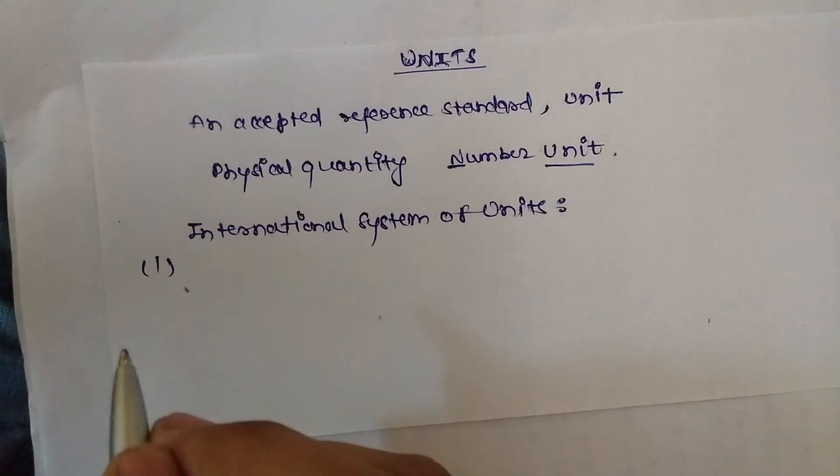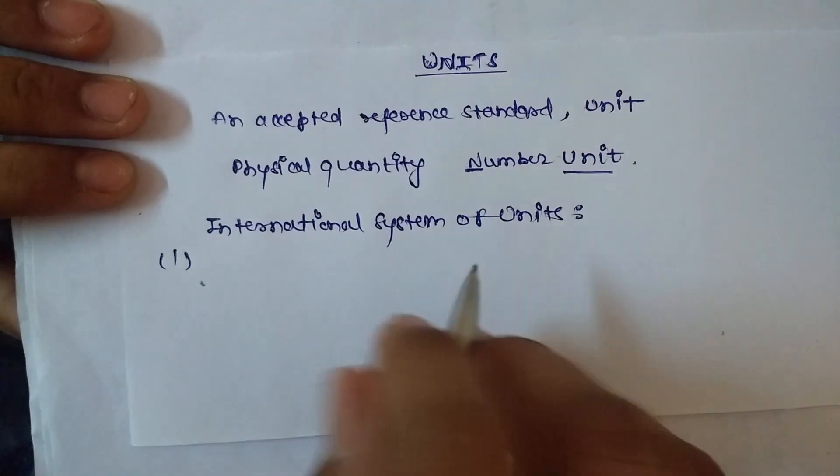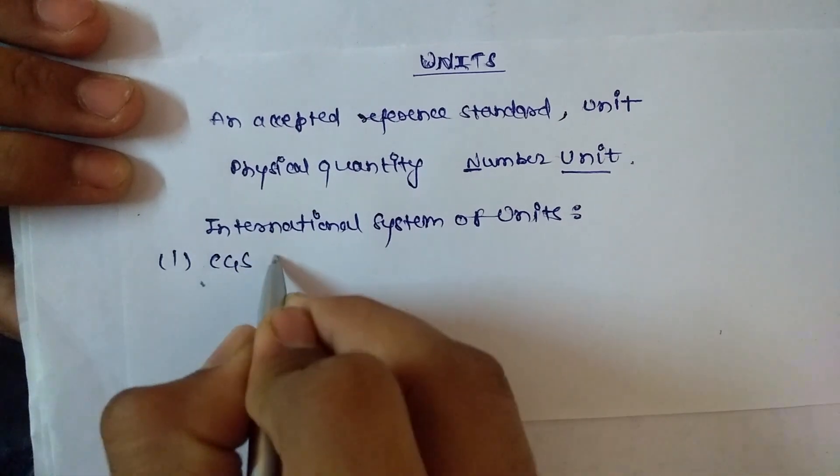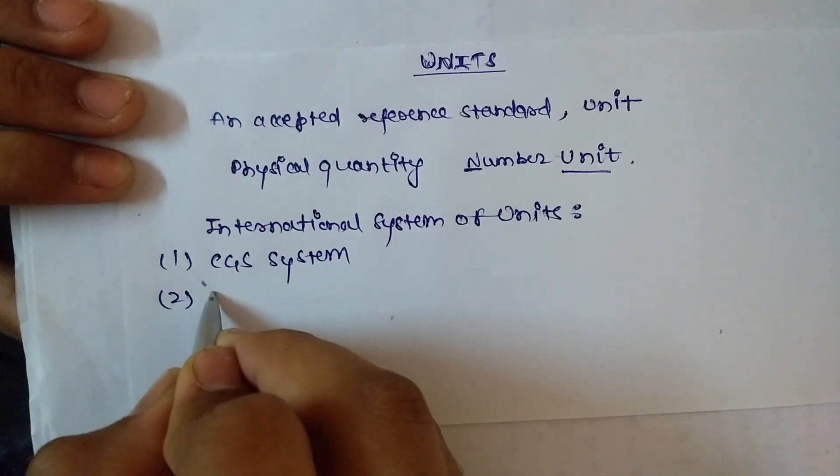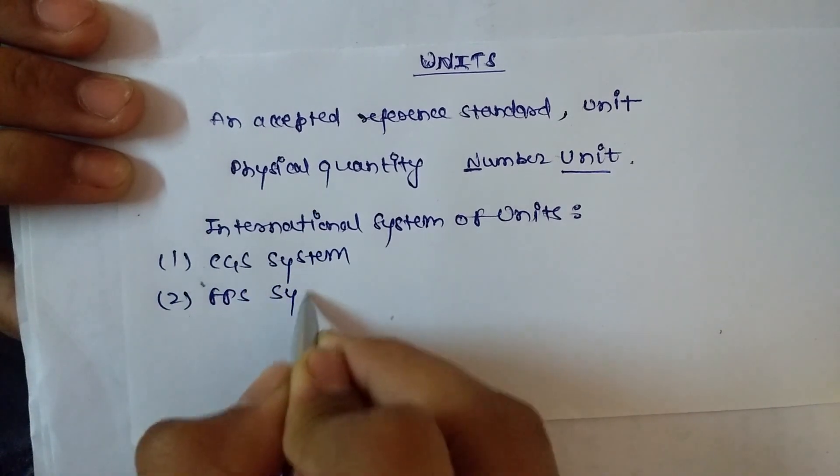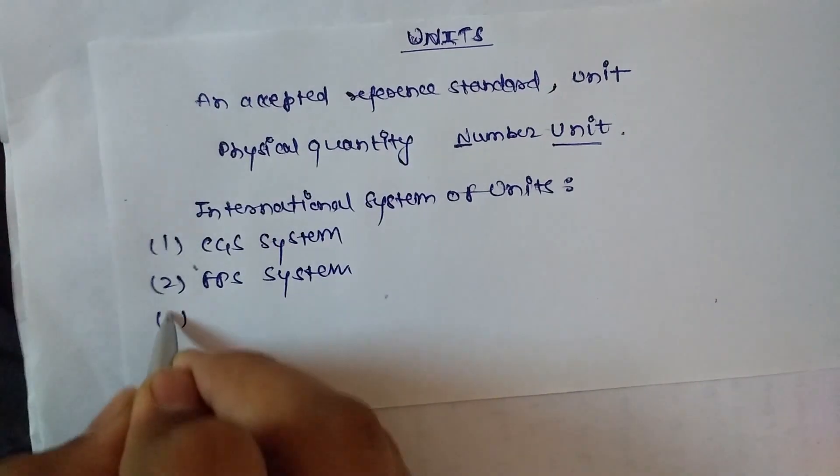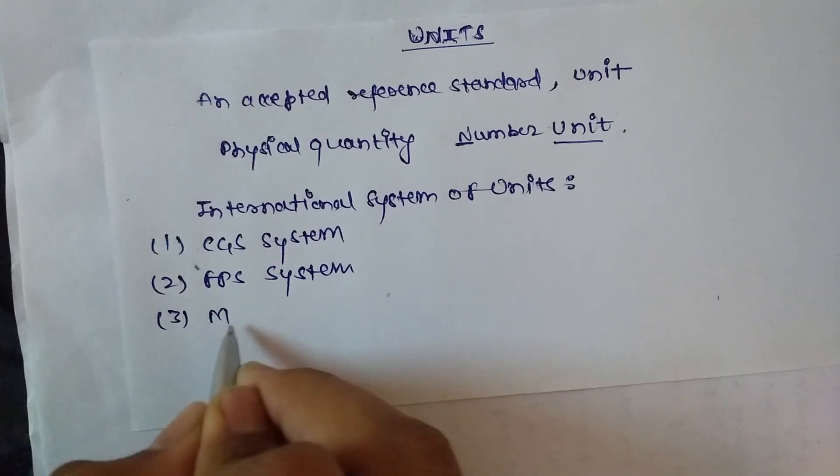Three popular systems of units are: first is CGS system, second is FPS system, and third is MKS system.